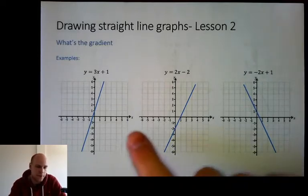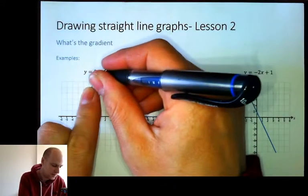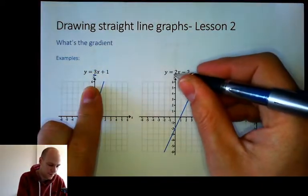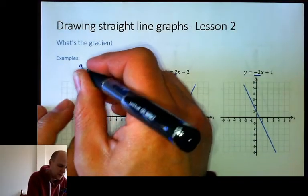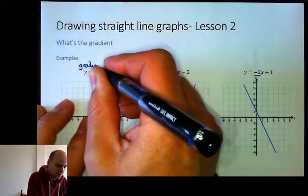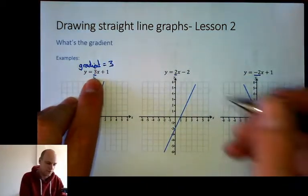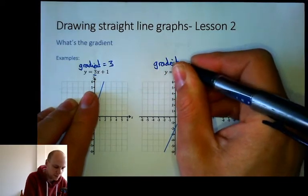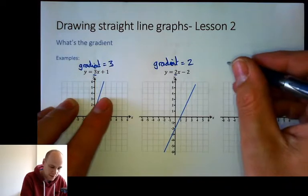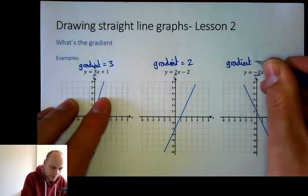Here we've got three examples and I'm going to use these to talk about the gradient. If you've got the equation like here, the gradient is really easy because it's just the number in front of the x. It does not include the x, just the number in front. So the gradient of that first one is three. The gradient of the second one is two. And the gradient of the third one is minus two, negative two.